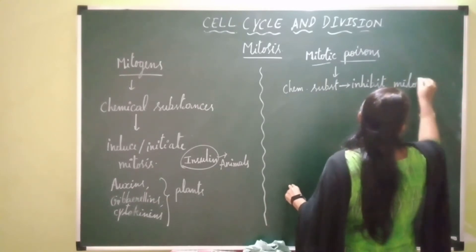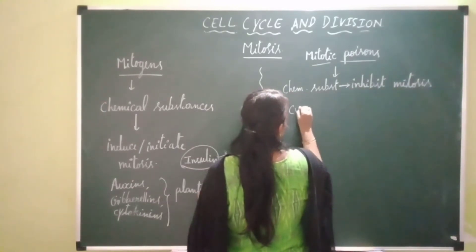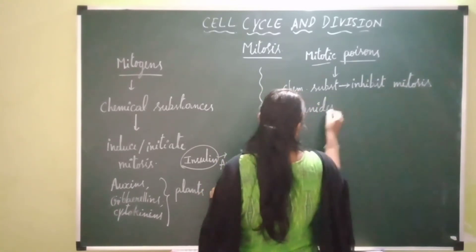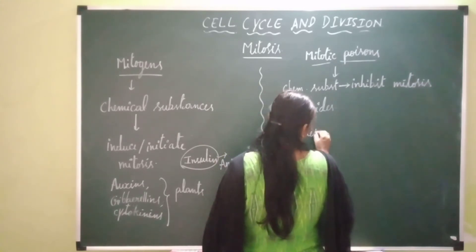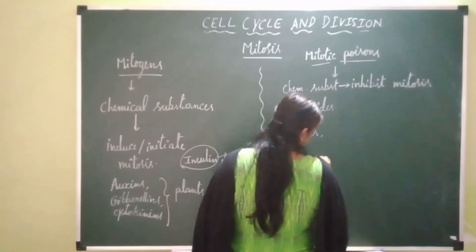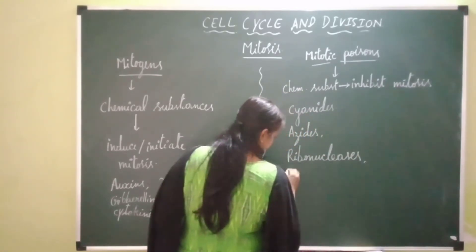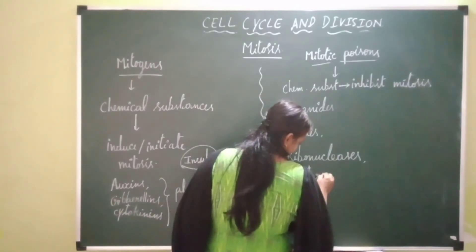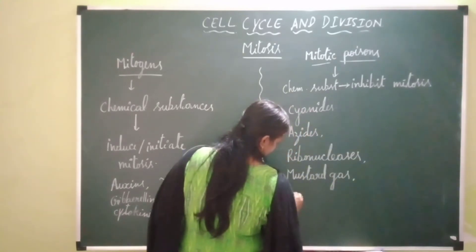Some of these chemical substances are cyanides, azides, ribonucleases, mustard gas, and colchicine. So colchicine inhibits mitosis.